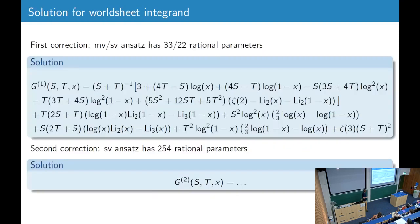Okay, so the multivalued and single-valued ansatz for the first correction have 33 and 22 rational parameters, and this is the result, which I wrote in terms of classical polylogs, because it looks more familiar. It's not obvious that this can be written in terms of single-valued polylogs, but it's true. And then we can do checks. So we made some assumptions, so we have to do checks.